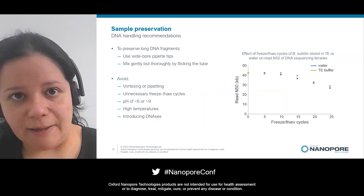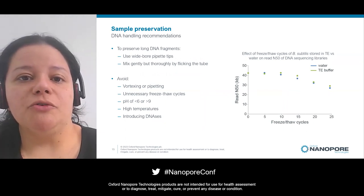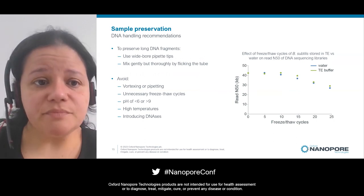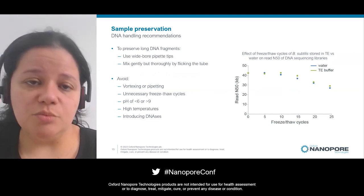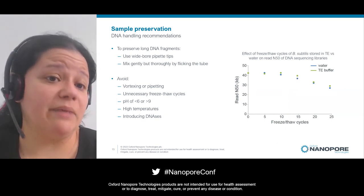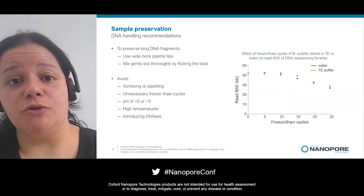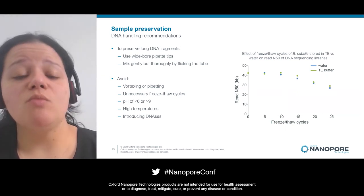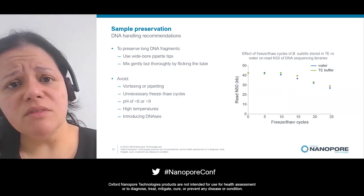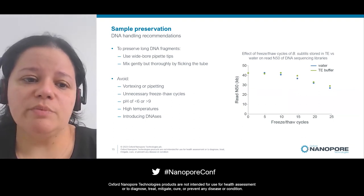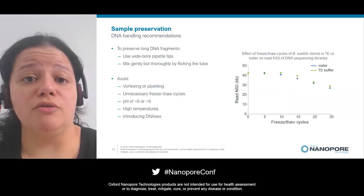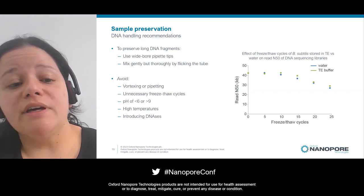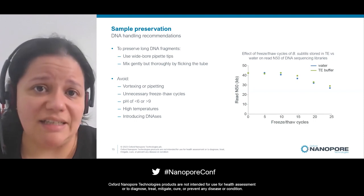When handling DNA to preserve long fragments, ensure you are not shearing your sample. Use wide-bore tips and mix gently but thoroughly by flicking the tube — do not vortex, avoid vortexing and pipette mixing. Freeze-thaw cycles also have a negative impact on read length; after 10 freeze-thaw cycles we've seen a drop in the N50. For long-term storage, keep samples in the freezer, and if you plan to use the same sample repeatedly, split it into different tubes to avoid freeze-thaw cycles.